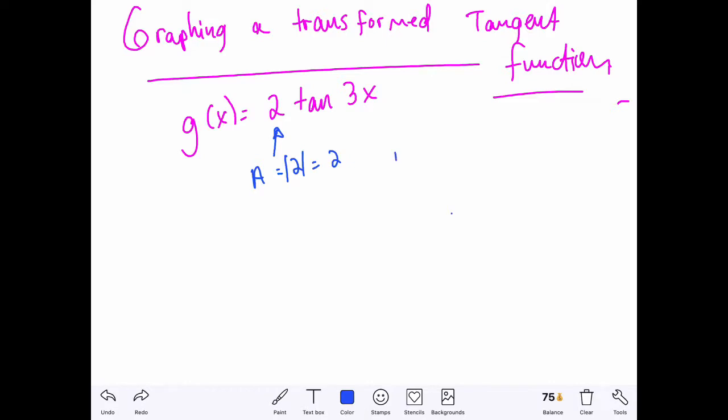And let's identify our period. Remember our period for tangent functions is π over the absolute value of b, not 2π, just π. So π over the absolute value of 3, which is π thirds.